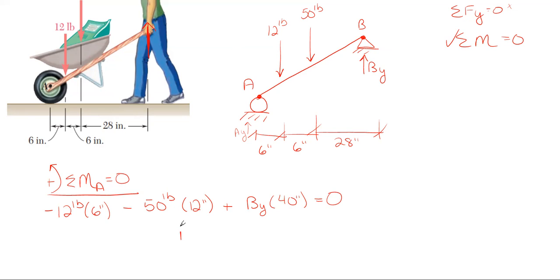We can rearrange and solve for B sub y because it's the only unknown in this equation. When you do this, you'll get 16.8 pounds. It's a positive number, so my assumed arrow direction at the beginning of upwards was correct, which makes sense because when you pick up a wheelbarrow, you are pulling upwards.